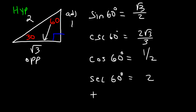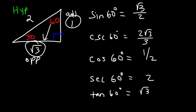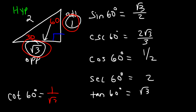To find tangent of 60, it's going to be opposite over adjacent. So that's going to be square root of 3 over 1, or just square root of 3. Cotangent of 60 is going to be the adjacent side divided by the opposite side, which is 1 over square root 3, and that becomes square root 3 over 3.